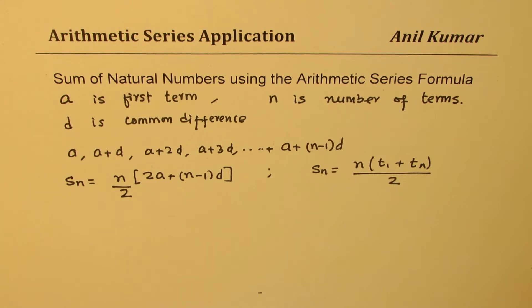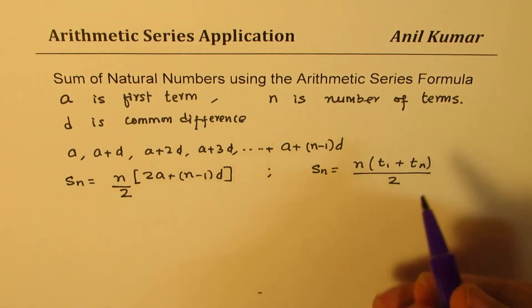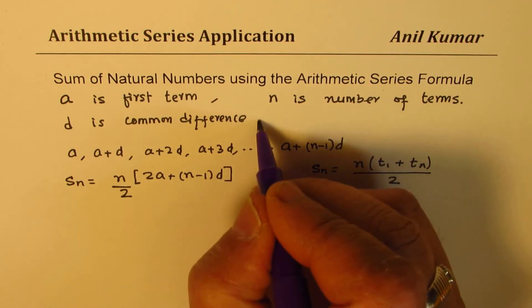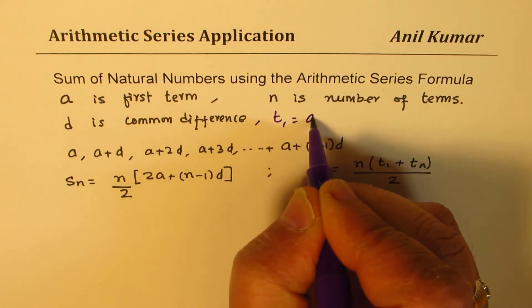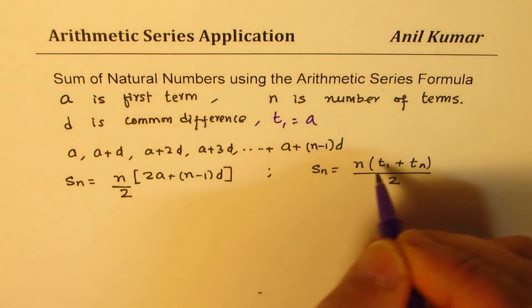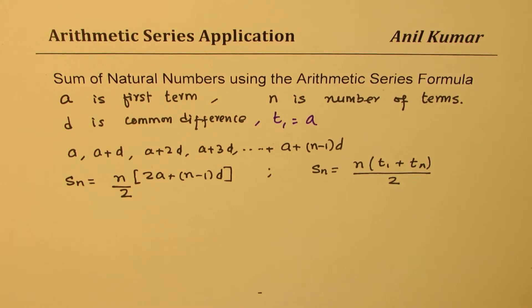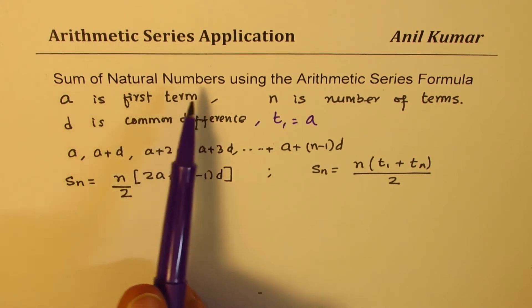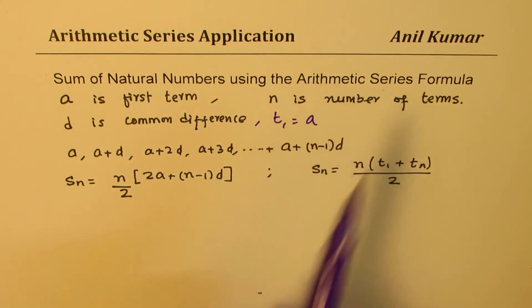Now the question is, and also A is like T1. So the first term is A. T1 and A is kind of same thing. Okay, now we need to find what is the sum of natural numbers using arithmetic series.